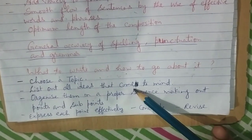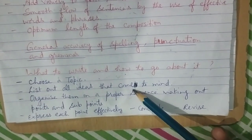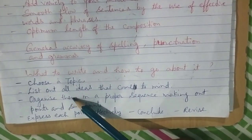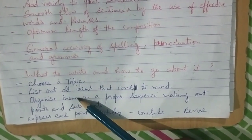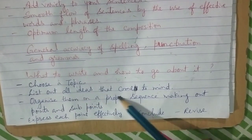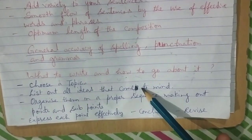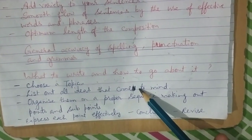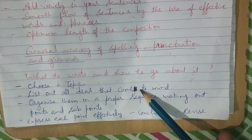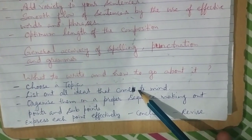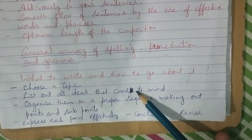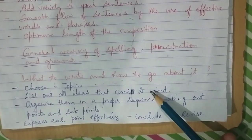What to write and how to go about it: choose a topic, then list out all ideas which come to mind pertaining to the subject. We should arrange them in a proper sequence, making out points and sub-points. The next step is to express each point effectively.